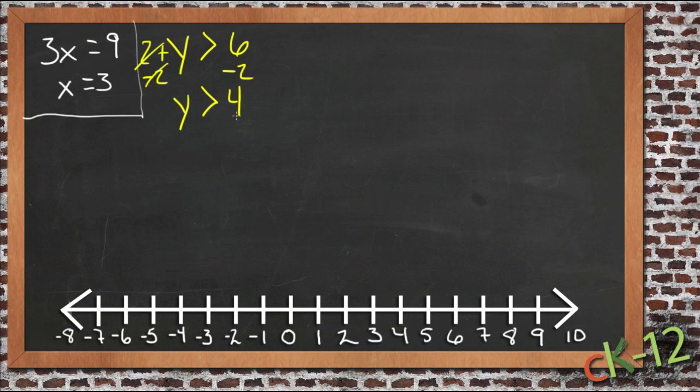So our answer is y can be any number that's bigger than 4. What that's saying is that as long as we put a number in that's bigger than 4 in place of y, this statement will be true. If we were to put in anything smaller than 4, we'd be adding 2 to something that was too little to make it bigger than 6. If we put in anything bigger than 4, like 5 or 6 or 7, then we add that to 2, it's going to be bigger than 6 and this statement will be true.